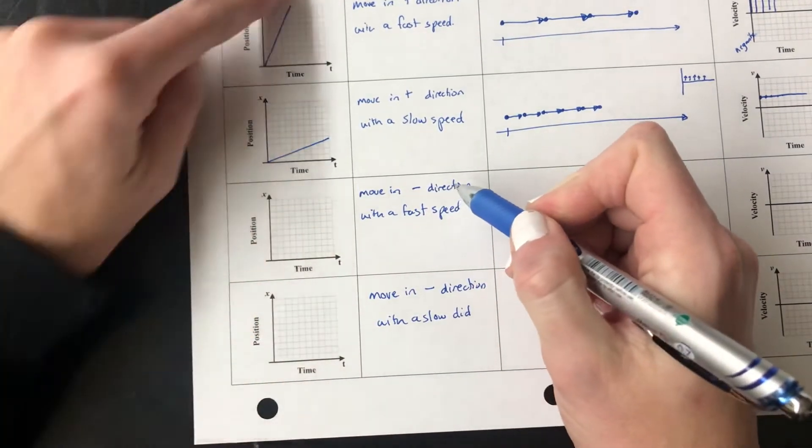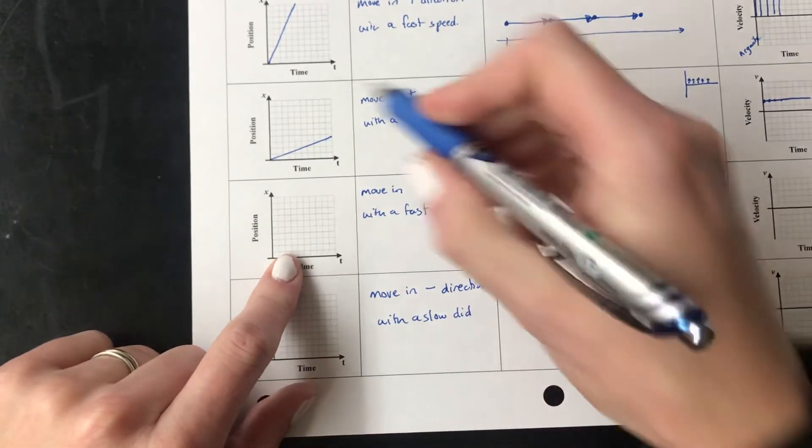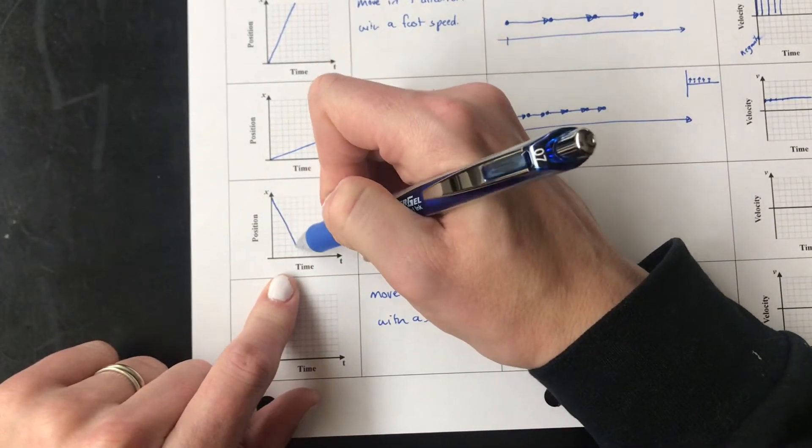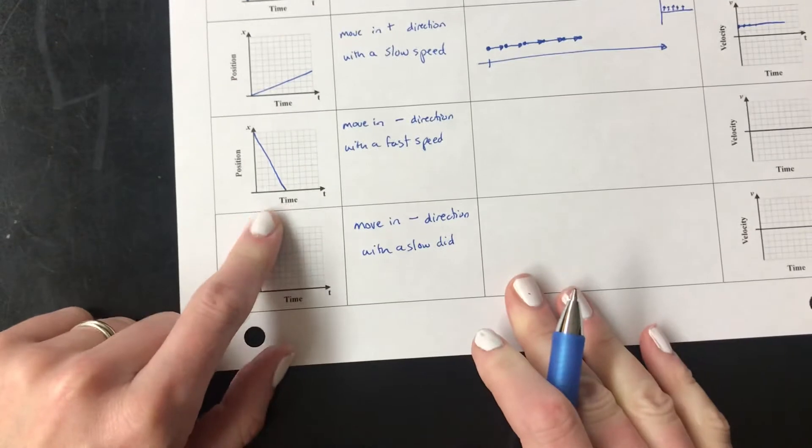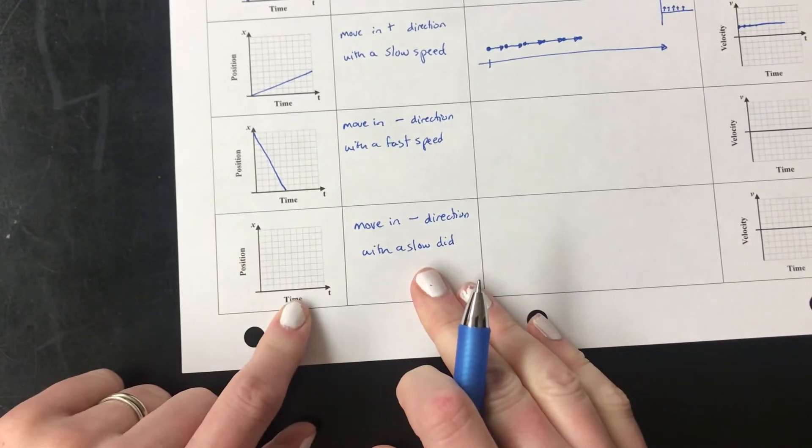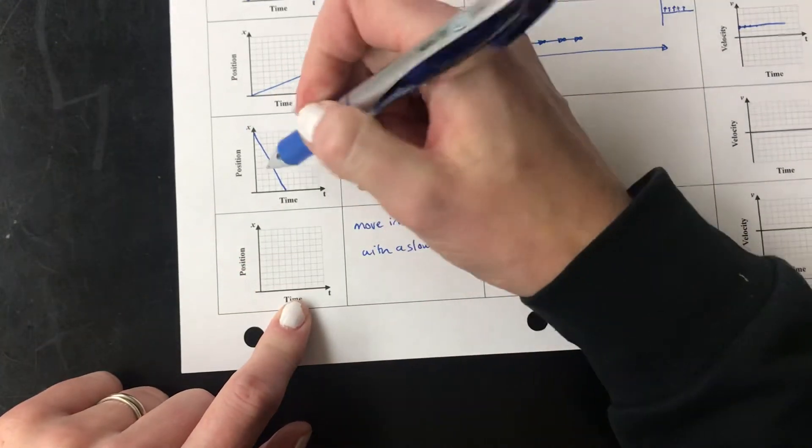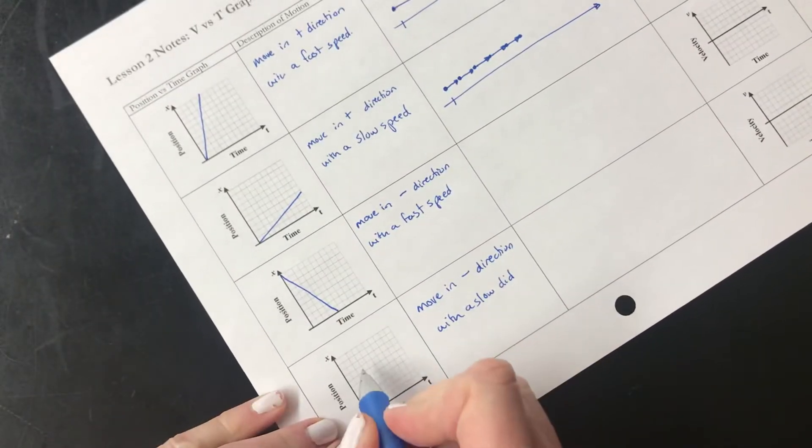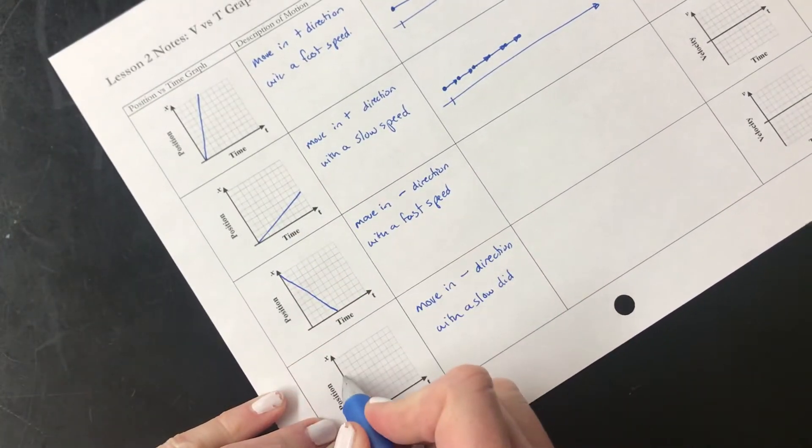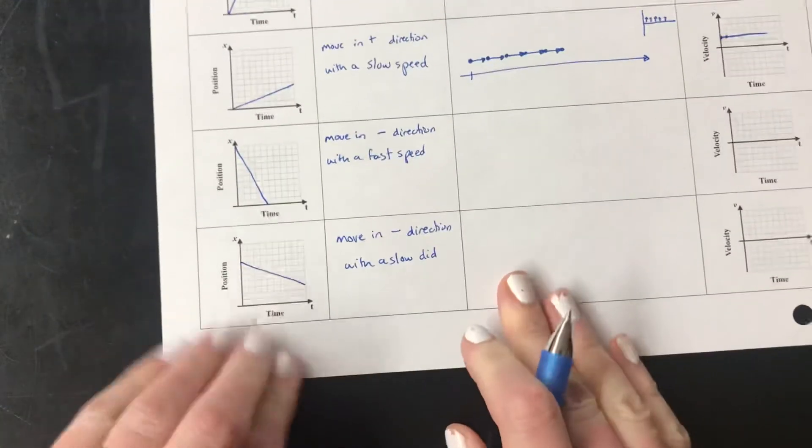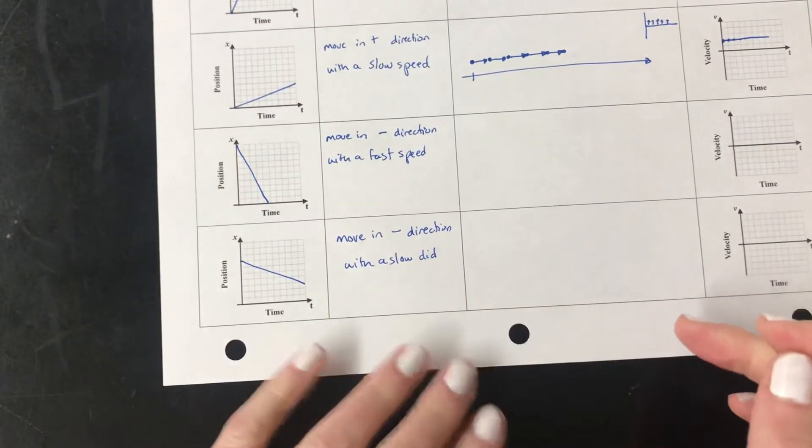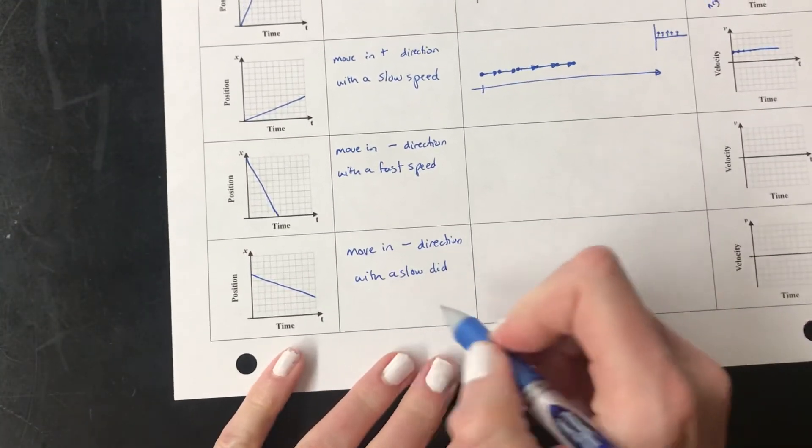So remember in the negative direction now my line is going to go down. Fast still means steep so it's going to go down quickly like that. Negative direction with a slow speed is going to go down but it's not going to go down as fast. Just like this one didn't go up as fast so it's going to go maybe like that. Exactly where that line is located depends on where my object is but it's still going slow.